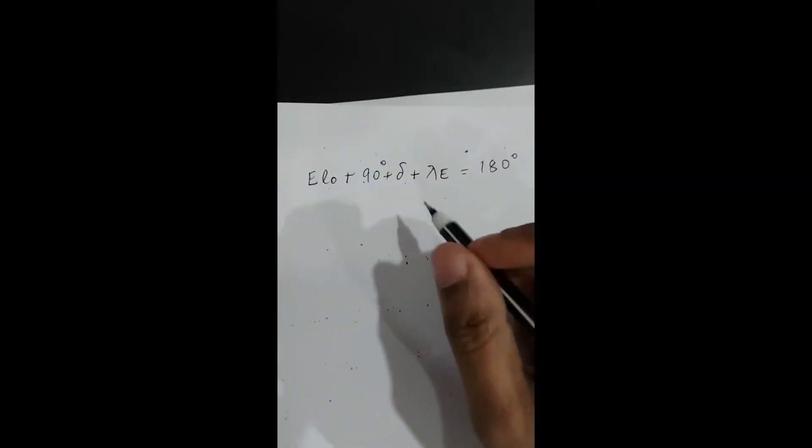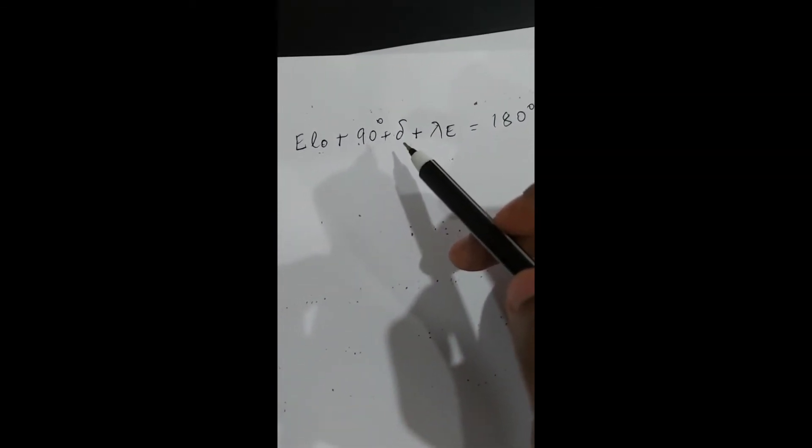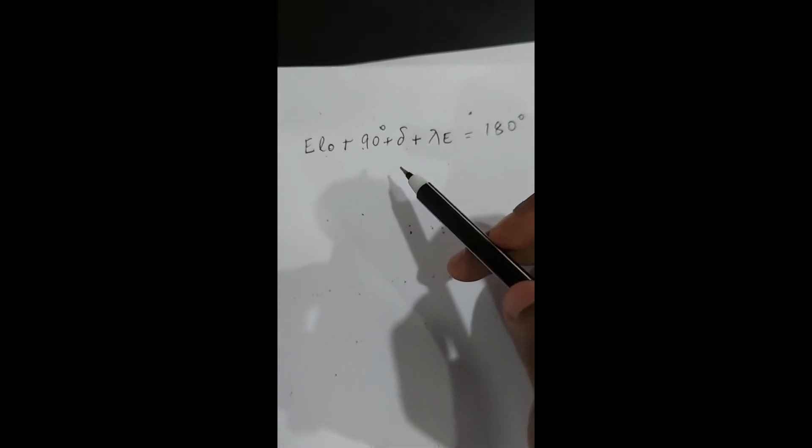The angle delta is included in 90 degrees plus delta, which is the angle of tilt, and the latitude is denoted by lambda_e. By the geometry, the entire angle sums to 180 degrees: el_naught plus 90 degrees plus delta plus lambda_e equals 180 degrees. Keeping delta on the left-hand side and sending all other terms to the right-hand side, we get delta equals 180 minus el_naught minus 90 degrees minus lambda_e, which simplifies to 90 minus el_naught minus lambda_e.